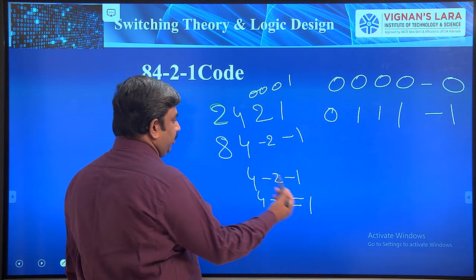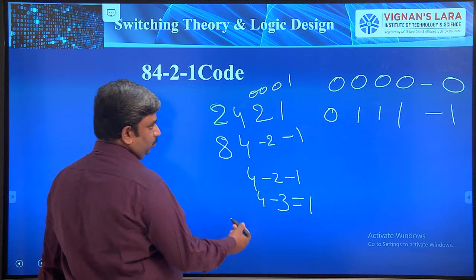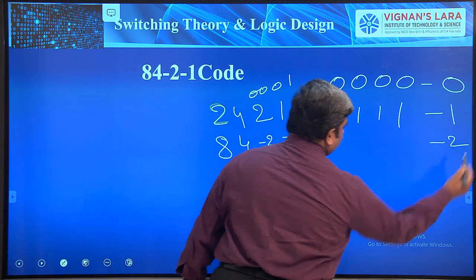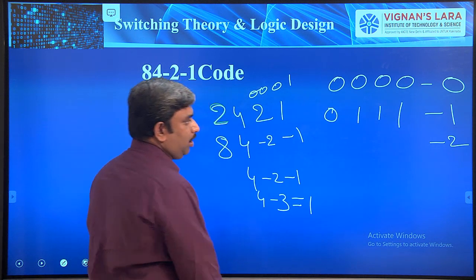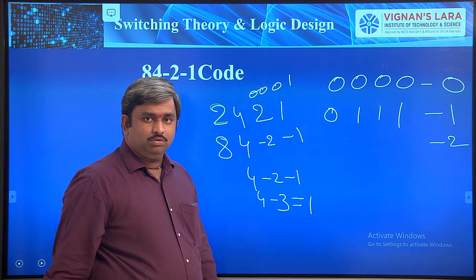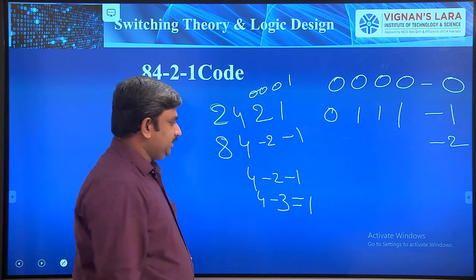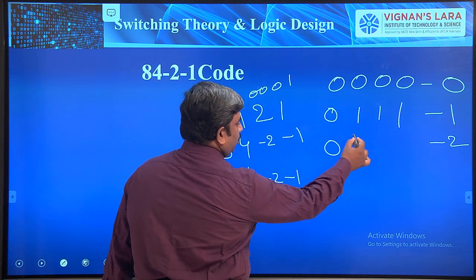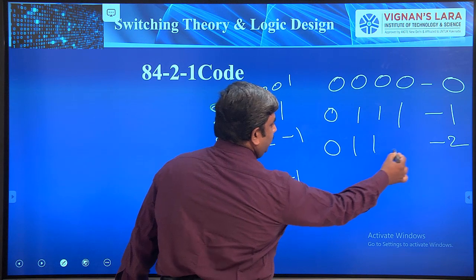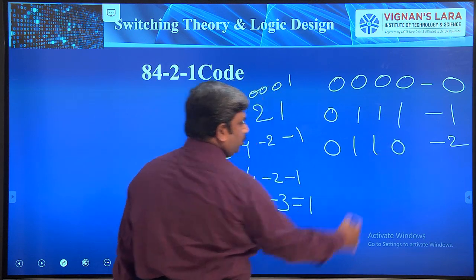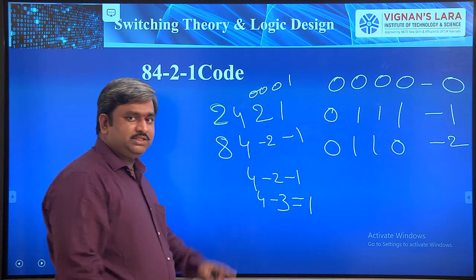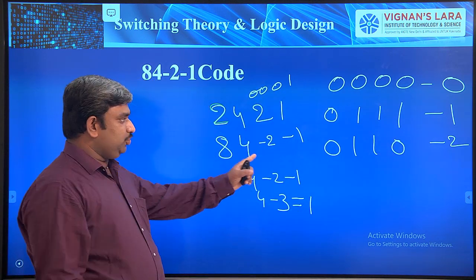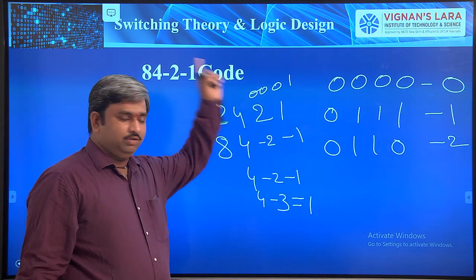So 0111 is the representation for decimal 1 in the 8, 4, -2, -1 code. For decimal 2: 0110, because 4 + (-2) = 2. For decimal 3: 4 + (-1) = 3, so the code is 0101. For decimal 4: 0100.